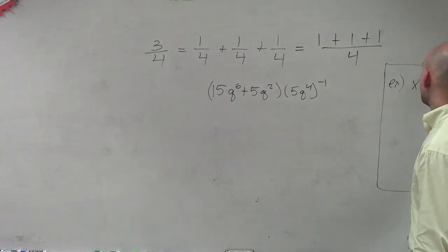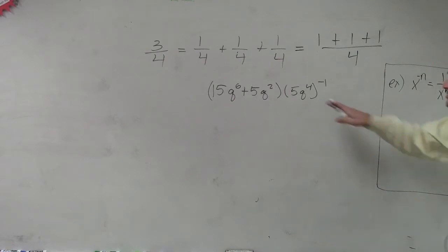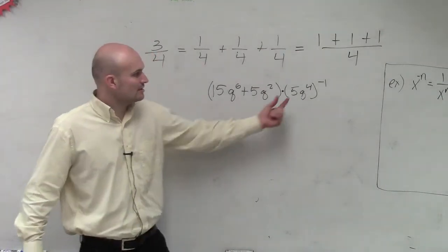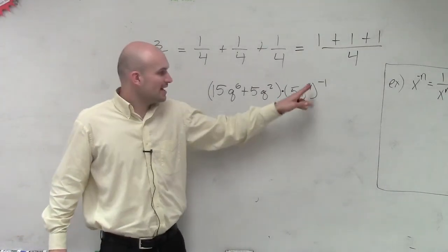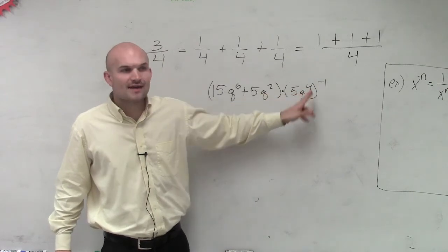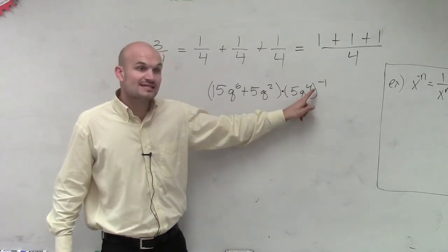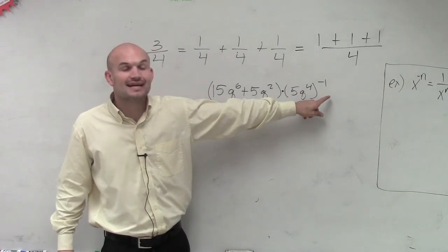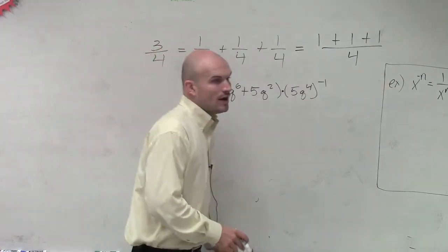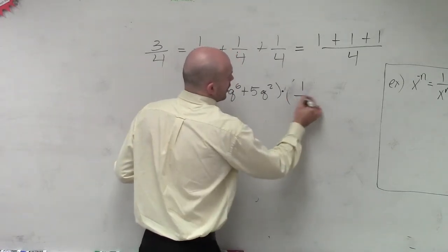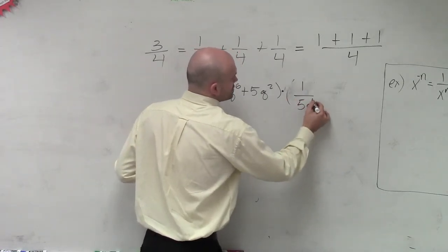if you have x to the n or x to the negative n, that equals 1 over x to the n, right? So what I'm doing right now is I am multiplying this binomial times this monomial. But I don't want to have this, it's a multiplication problem, in parentheses and in parentheses. However, this is raised to the negative first power. So I can rewrite that as 1 over 5q to the fourth